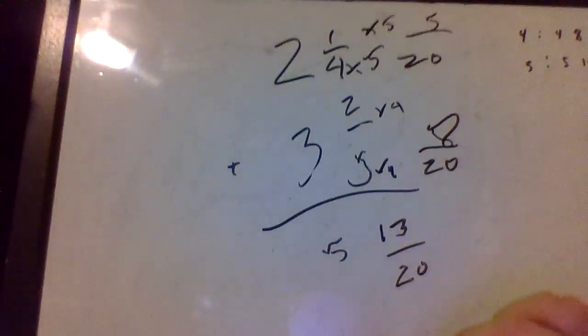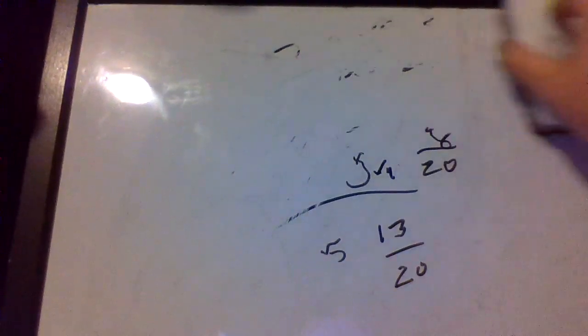Subtraction is much the same with the added caveat of borrowing. And in addition you have the added caveat of borrowing if need be. So now we're going to look at multiplying mixed numbers. Now multiplying fractions was pretty easy in my opinion, easier than adding and subtracting them.